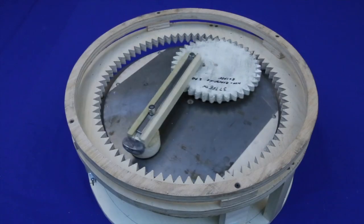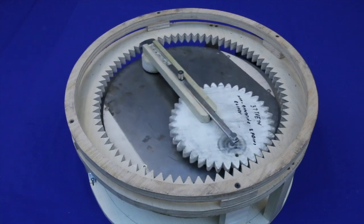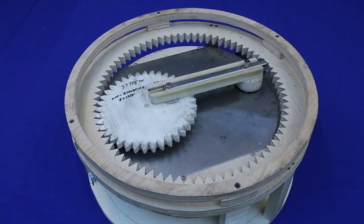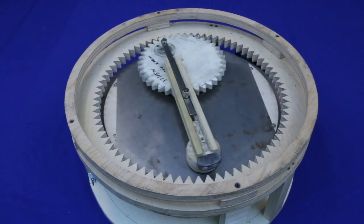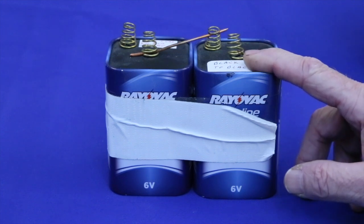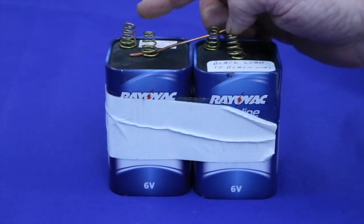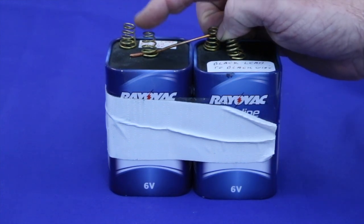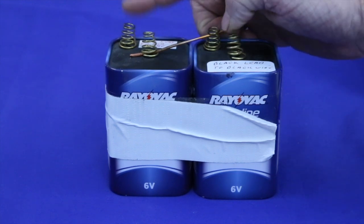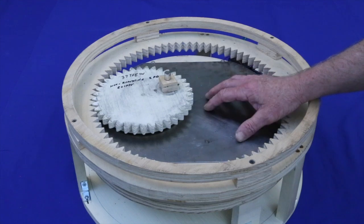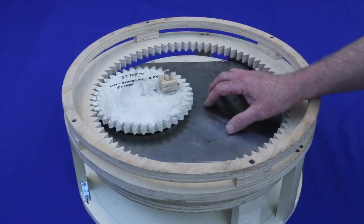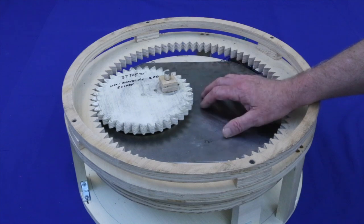And this is what the mechanism looks like in operation. Two 6-volt lantern batteries connected in series provide power. The motor is driven by connecting just one of the batteries, while the lights are connected across both. Altogether, it took about 30 hours to make this machine. Well, let's throw some gears on her and see how she works.